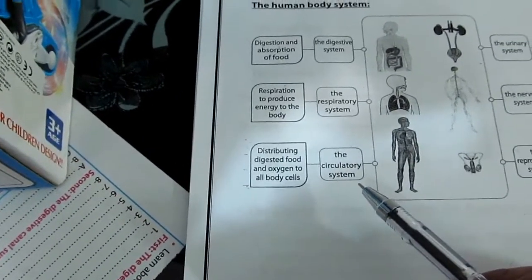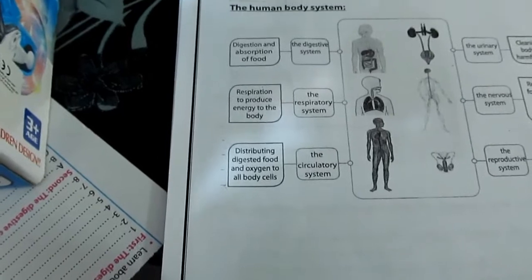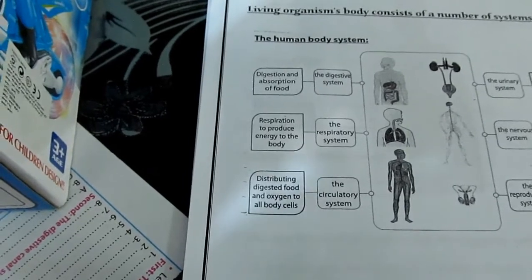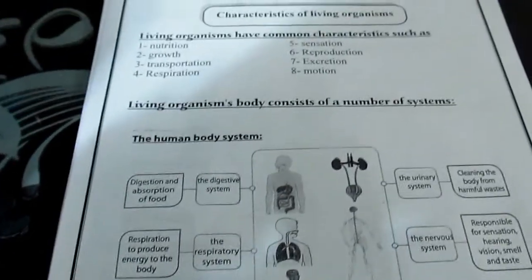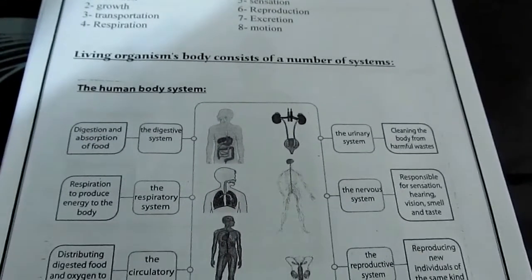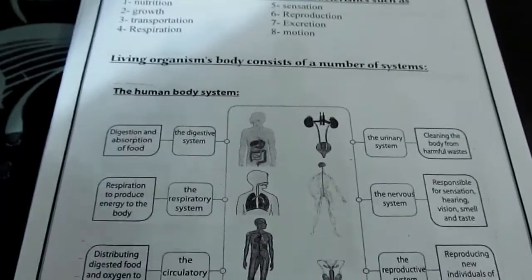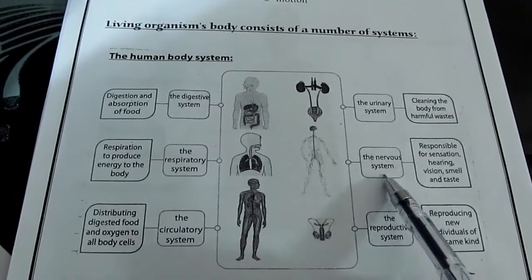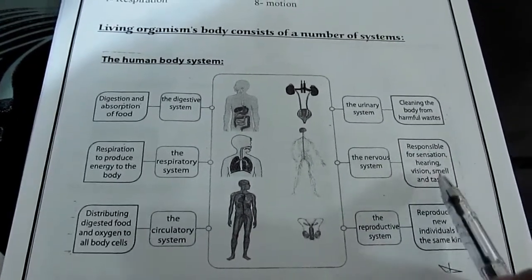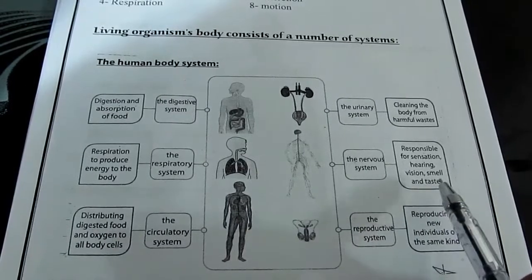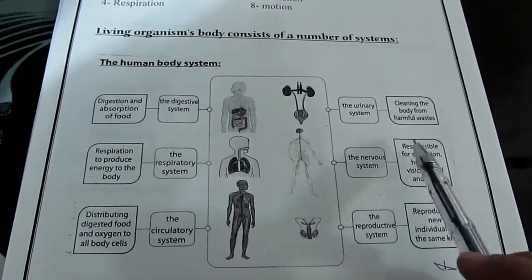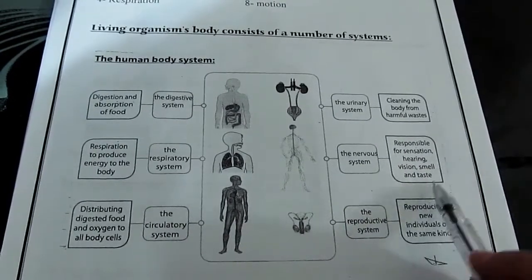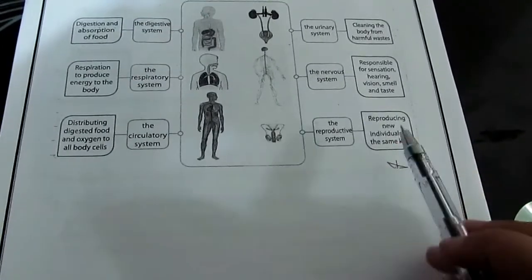Number three: circulatory system — distributing digested food and oxygen to all body cells. Number four: urinary system — cleaning the body from harmful wastes. Number five: nervous system — responsible for sensation, hearing, vision, smell, and taste. Number six: reproductive system — reproducing new individuals of the same kind.